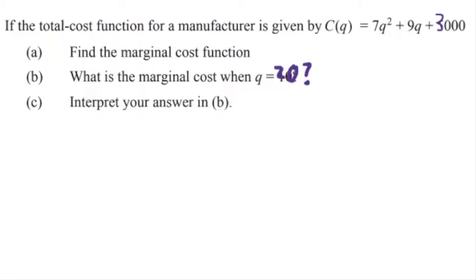Let's look at an example. If the total cost function for a manufacturer is given by C(Q) equals 7Q squared plus 9Q plus 3000, first we need to find the marginal cost function, then find what is the marginal cost when Q equals 20, and interpret your answer.